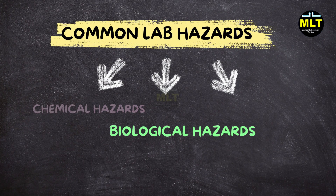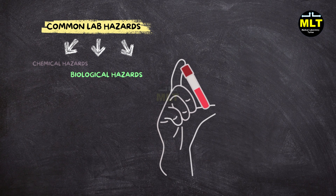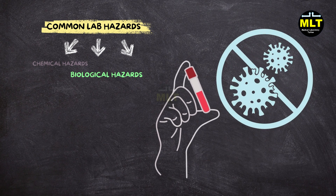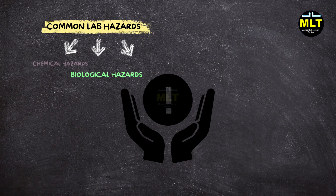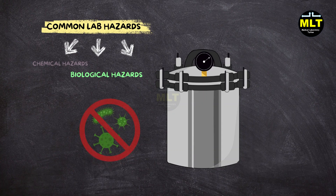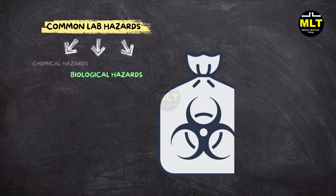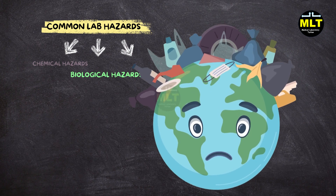Biological hazards: Working with blood samples or infectious agents means you need to be especially careful to avoid exposure. Always handle specimens with caution and follow proper biosafety protocols. Techniques like autoclaving help eliminate harmful germs and keep the lab clean. Always throw away biological waste in biohazard containers, as improper disposal can lead to infections or environmental contamination.